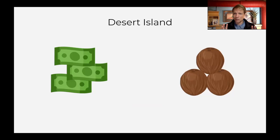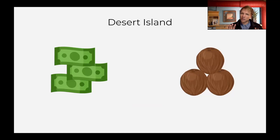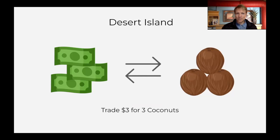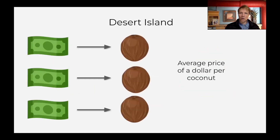This is the most important concept of the unit plan — inflation and where it comes from. Let's really nail it down with a thought experiment. We're on a desert island. We've got three coconuts and $3 — that's everything on the island. How much are the coconuts going to sell for? We're going to trade $3 for three coconuts, so they'll sell for about a dollar each.